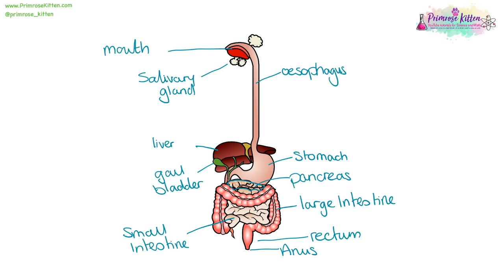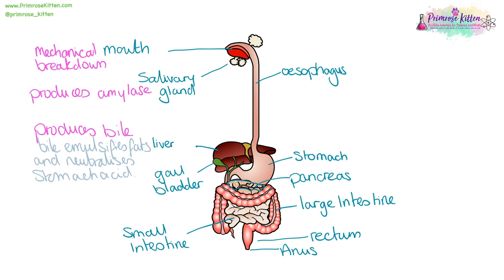Here we have an overview of our digestive system. The mouth, which is mechanically going to break down food. The salivary gland, which is going to produce amylase. The liver, which produces bile. Bile is something that emulsifies fats, increases the surface area of fats, turning them from a big blob into a small blob, and neutralizes stomach acid.